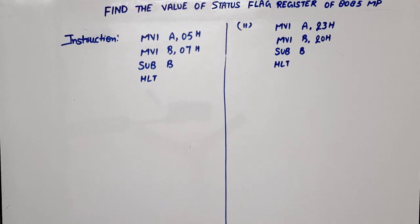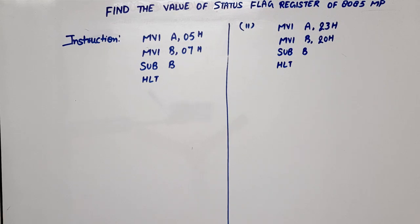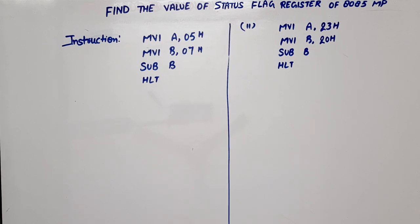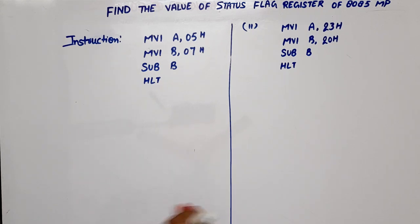Hello everyone. In this video lecture on microprocessors, I am going to discuss how we can calculate or find the status of flags of the flag register in the 8085 microprocessor. I have two examples here — both are subtraction examples. We will see how we calculate the flags in case of subtraction.